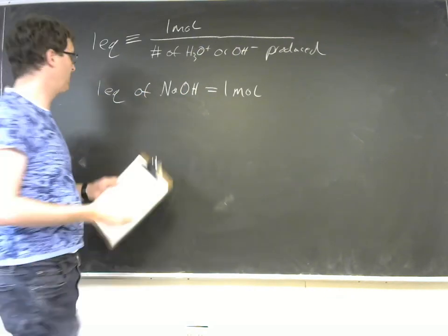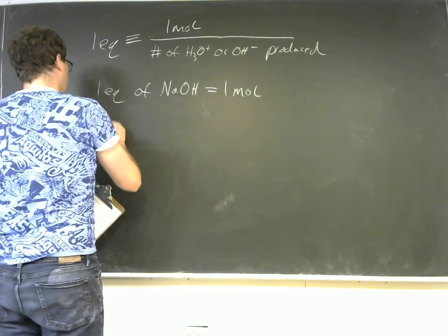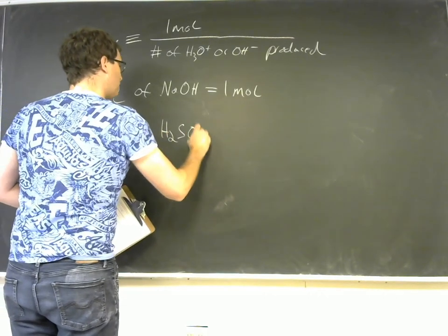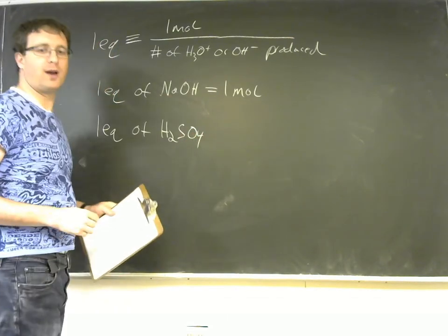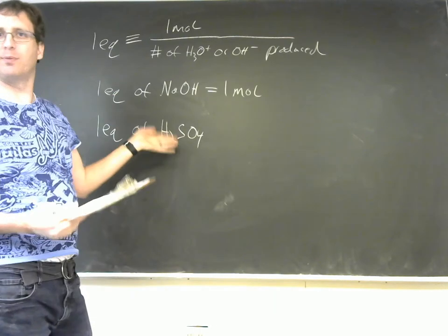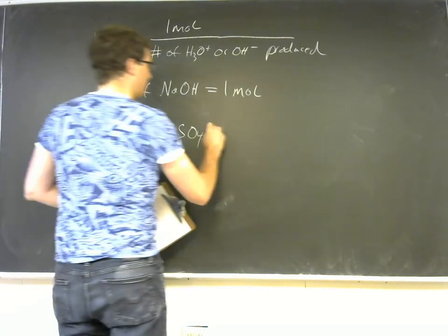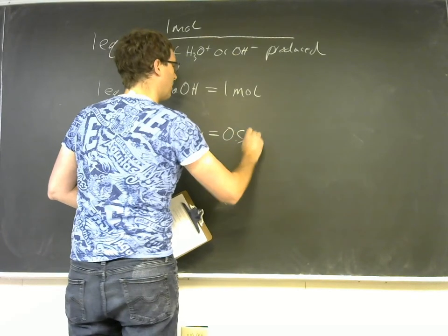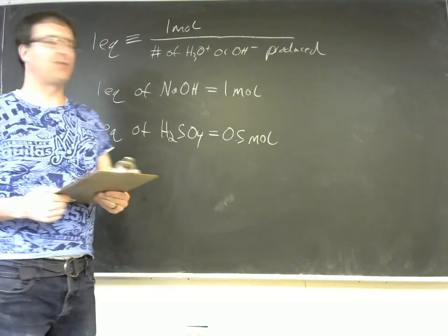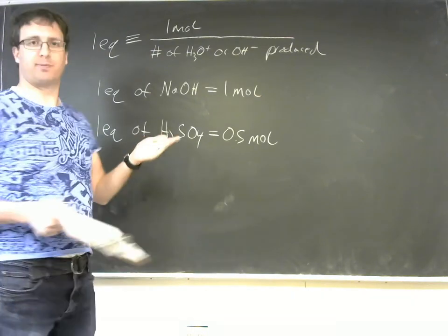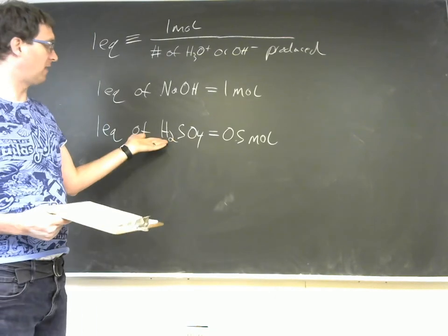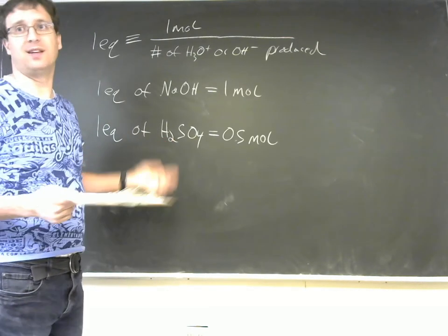If I want one equivalent of H2SO4, then that would be one mole divided by two because H2SO4 is capable of donating two protons. And so a half a mole of sulfuric acid is actually going to provide one equivalent of acid because it has sort of twice the acid reactivity.